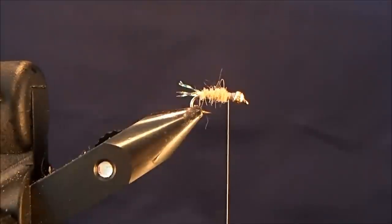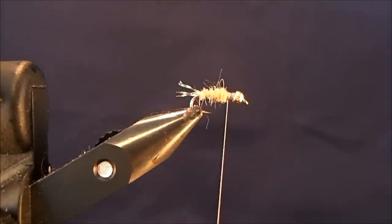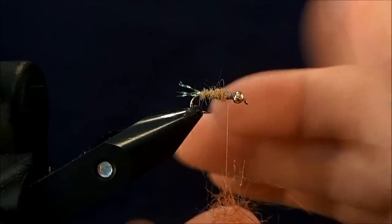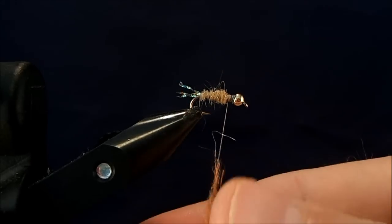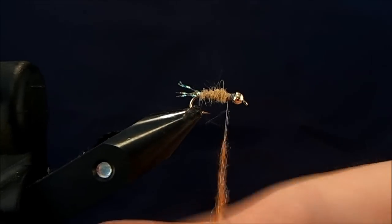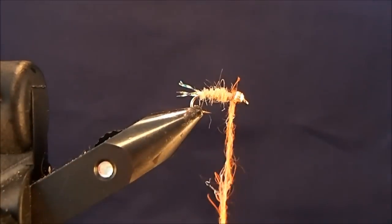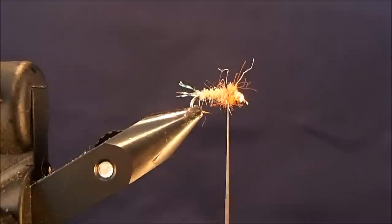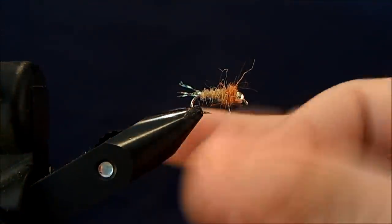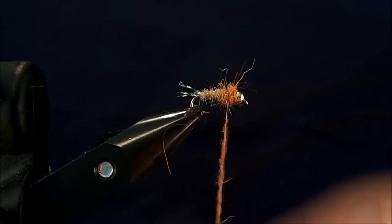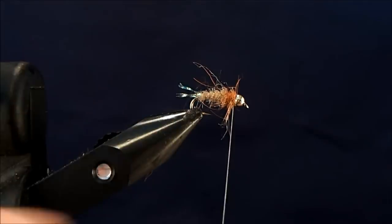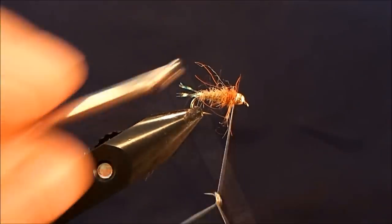For the thorax, I'm going to use the same blend of natural and Antron, but I'm going to use for the thorax a rusty orange color. I'm just going to start that on my thread. Take just maybe a pinch more. Make sure that's good and secured down. Then I'll pull that back. Make a couple wraps just to tie everything off and add some whip finishes.